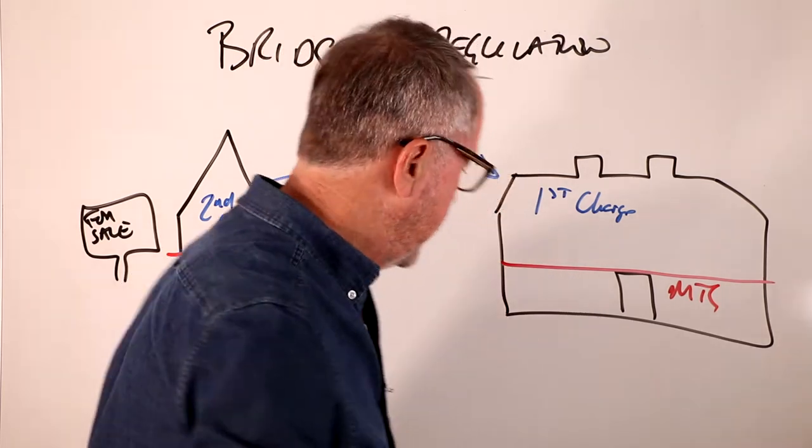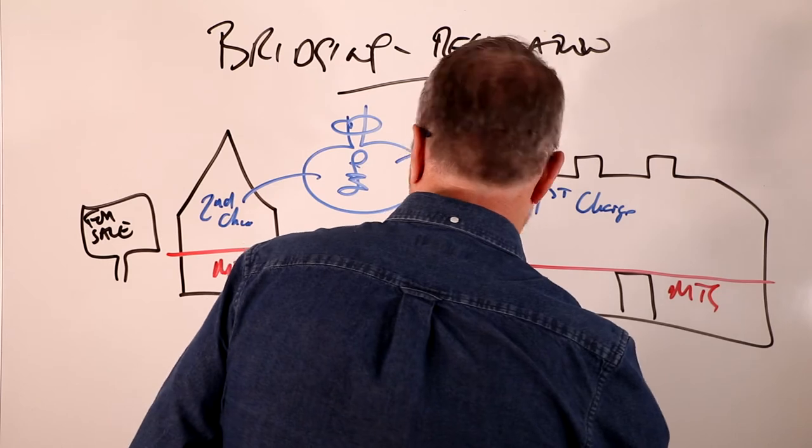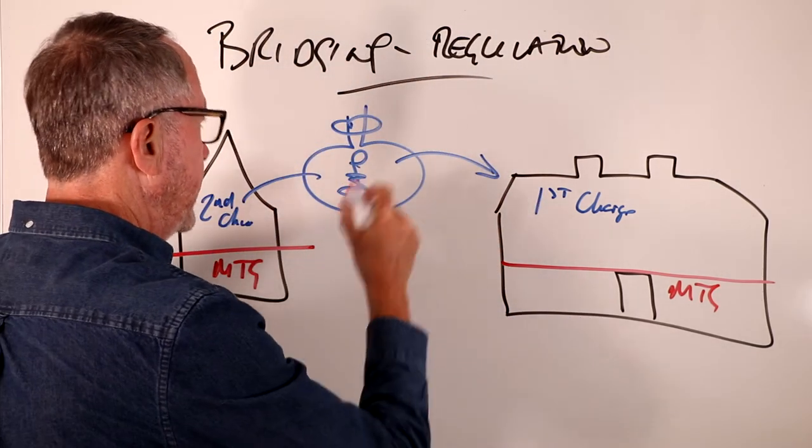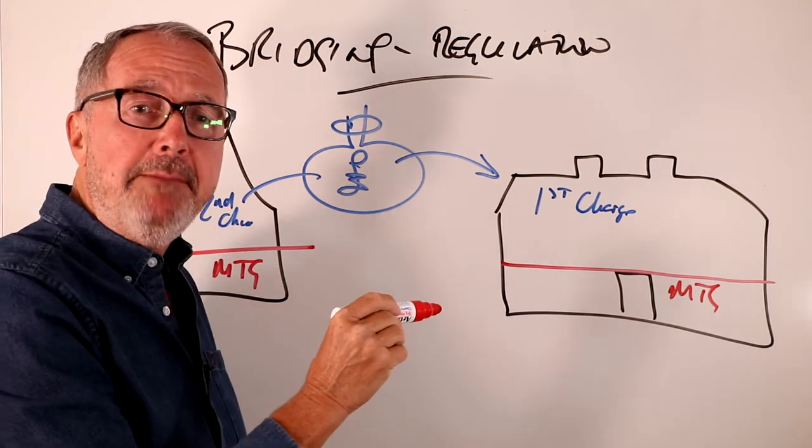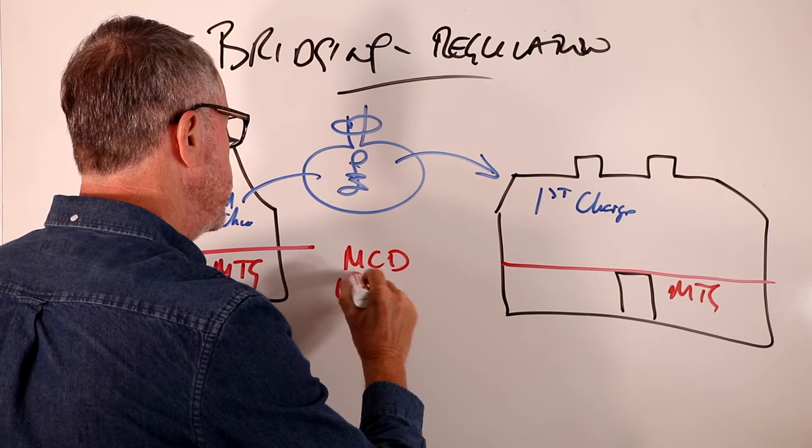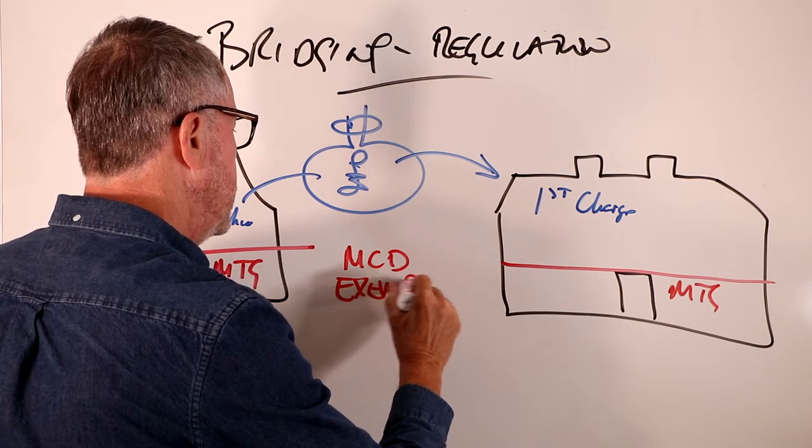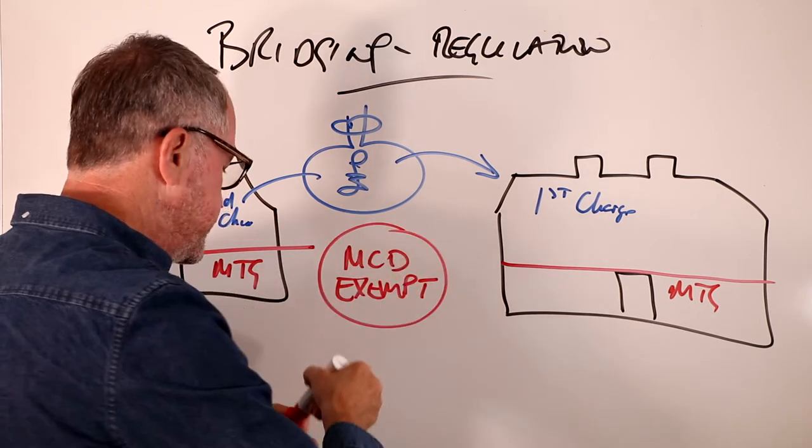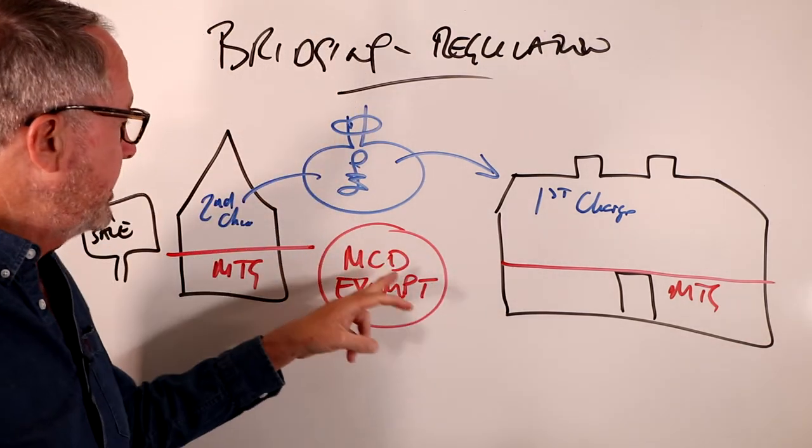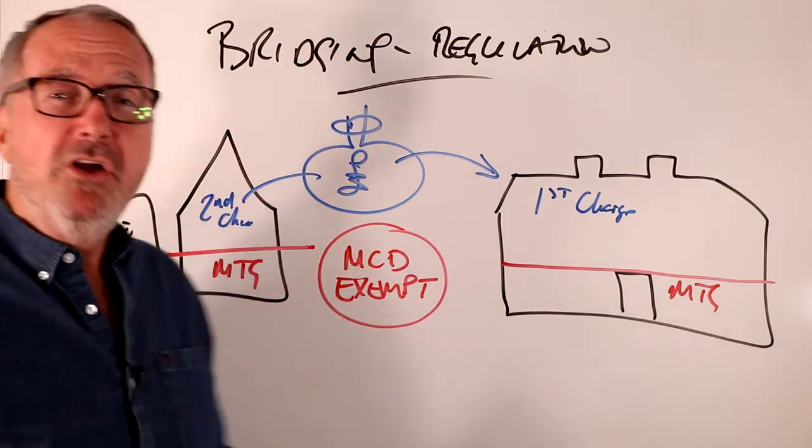So here's the rule. The basic rule is that bridging finance will be MCD exempt, they call it. MCD exempt. You may have seen that phrase being used. Now if it's MCD exempt, it means it's not regulated. That's the Mortgage Credit Directive, by the way, 2016. It's not regulated.